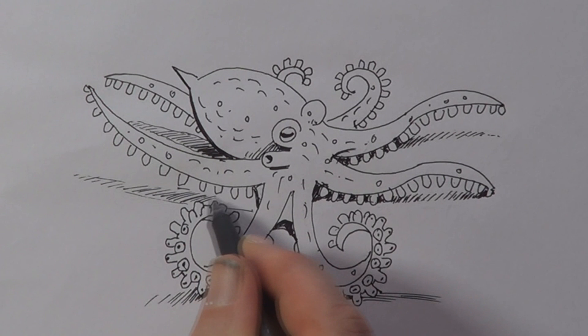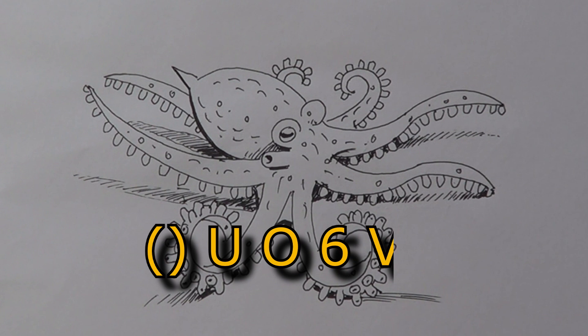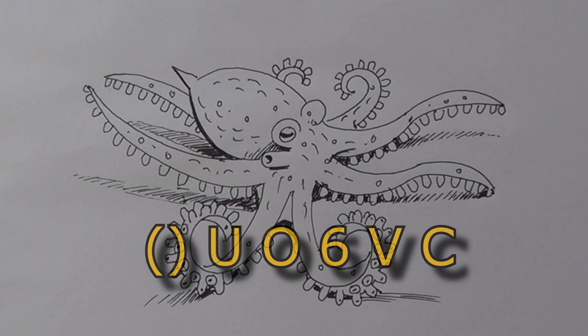And that's a very easy how to draw an octopus using brackets, the capital letter U, the letter O, the number six, the letter V and the letter C. And a little bit of shading. And we have our octopus. And that was the how to draw an octopus.